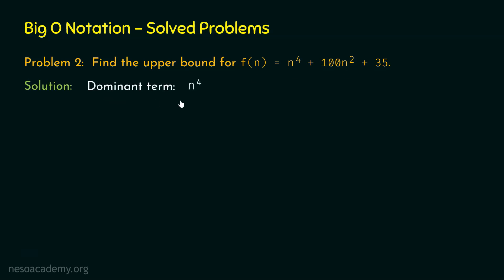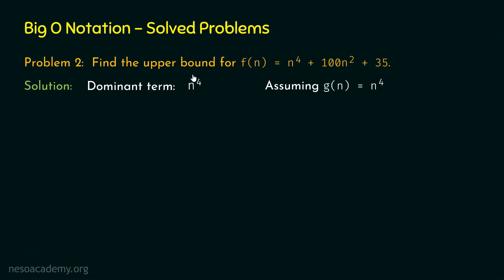Therefore, the dominant term in this expression is n⁴. Step number 2 is to assume some g(n) according to the dominant term. Let's say g(n) = n⁴. It is always a good idea to assume g(n) closer to the dominant term because we want to find the least upper bound of f(n) — not just any upper bound, but the least upper bound. So let us assume g(n) = n⁴.